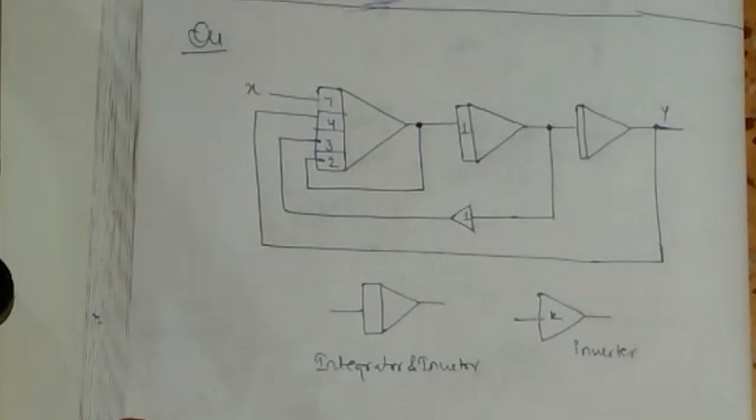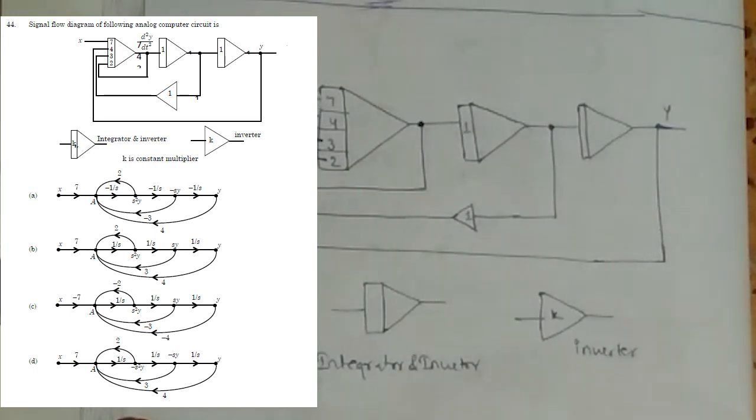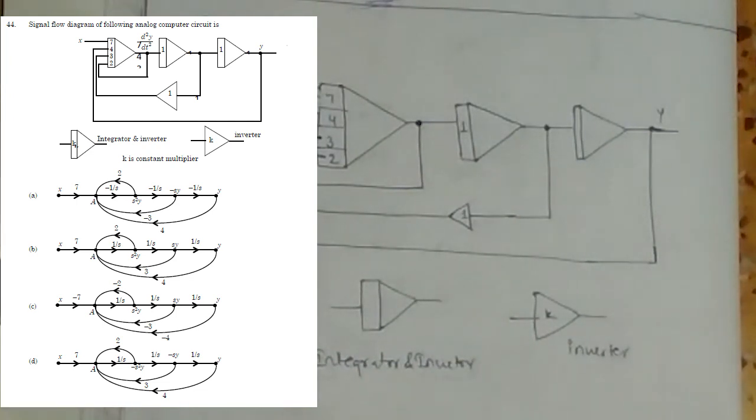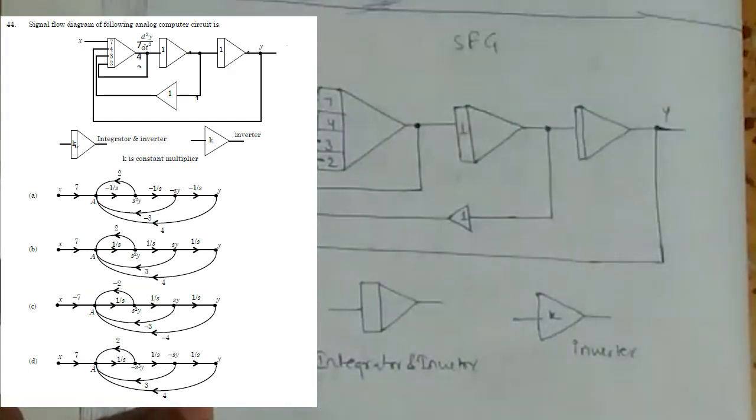Hello friends, welcome to GateKyan. This is one of the control questions. In the given question, we have a diagram and we have to draw its signal flow graph (SFG).